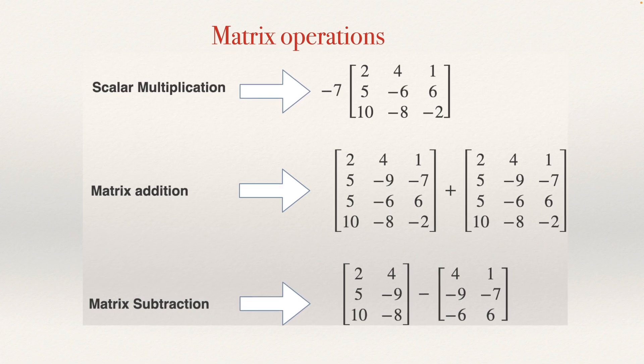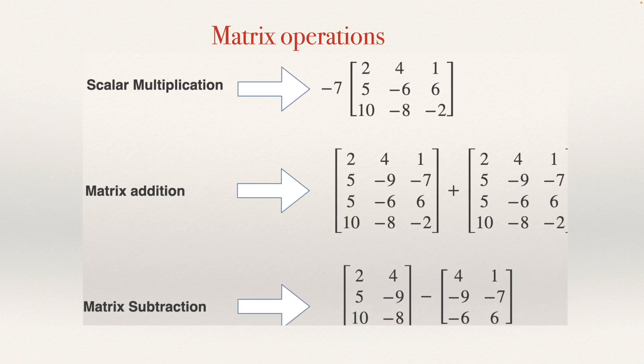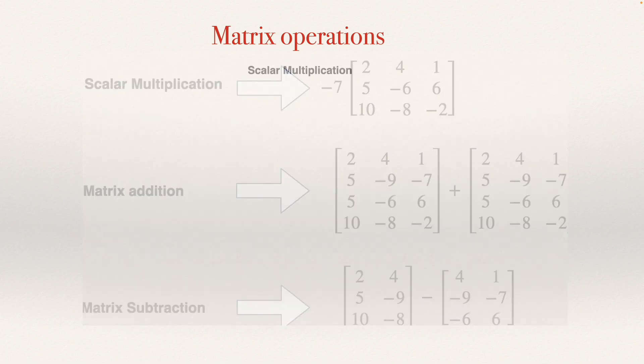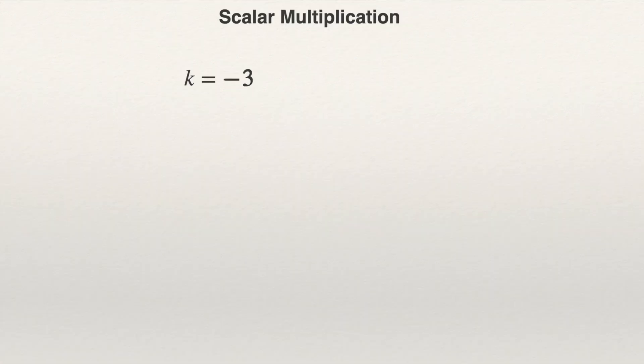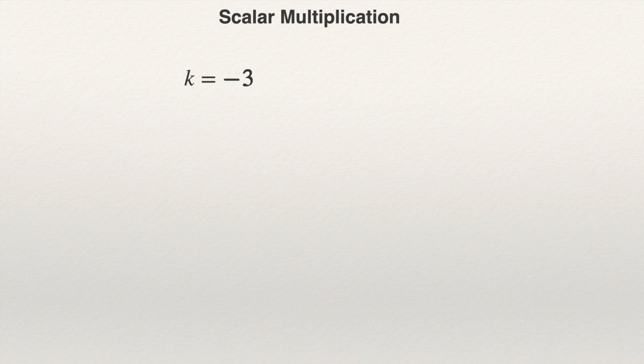The first operation will be scalar multiplication. When I say scalar, it refers to a number. For example, it could be k equals negative 3. Remember that a number is also a matrix — it's a one-by-one matrix. But in this case, I want to indicate that this number is going to behave as a number, not as a matrix. So I'm going to call it a scalar. Imagine that we have this scalar, minus 3.